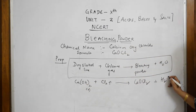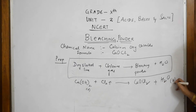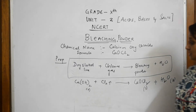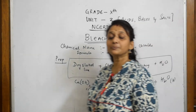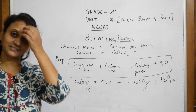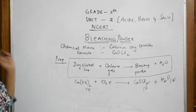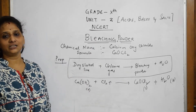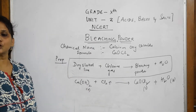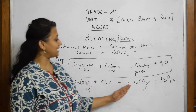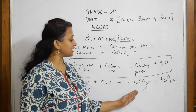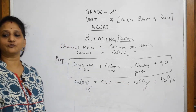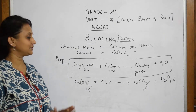So the preparation is simple: dry slaked lime introduced with chlorine gas gives calcium oxychloride, which is bleaching powder, as well as water in liquid form.